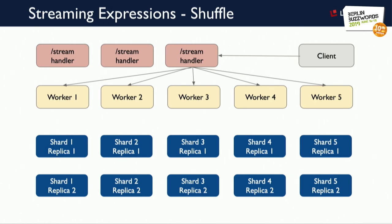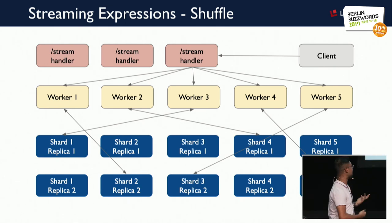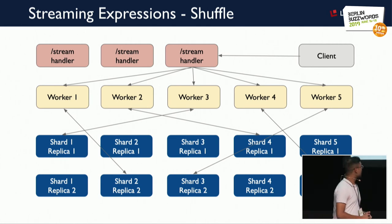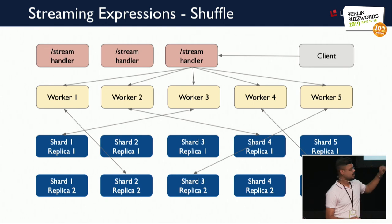There is a concept called shuffling in streaming expressions. The request from a client to the stream handler is forwarded to workers — in this case, five workers. In our Solr collection we have five shards with two replicas each, giving 10 cores. Each worker requests data randomly from these cores such that each shard is requested at least once — worker 1 might pull from shard 2 replica 2, worker 3 from shard 1 replica 1, worker 5 from shard 3 replica 2. These workers receive shuffled streams, perform stream decorators and evaluators on them, and send results back to the stream handler, which aggregates and merges all results before returning them to the client.